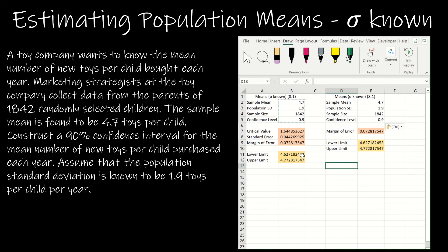So remember, when we talk about the interval, we're saying we are 90% confident that the true mean number of new toys per child bought each year is between 4.63 and 4.77 toys.